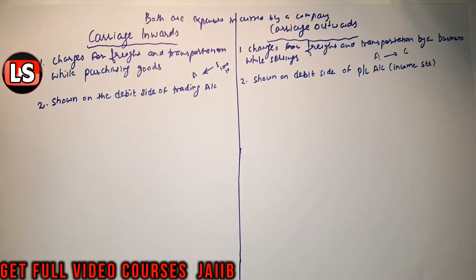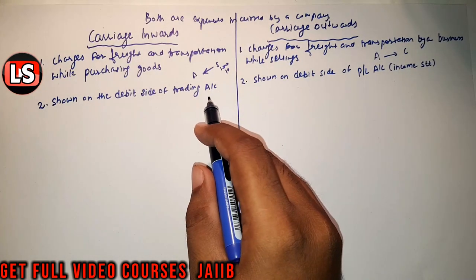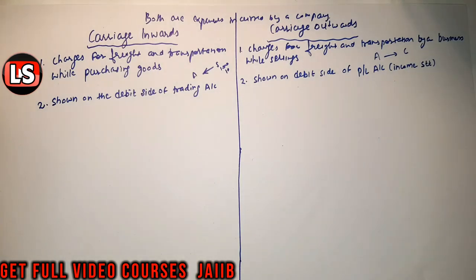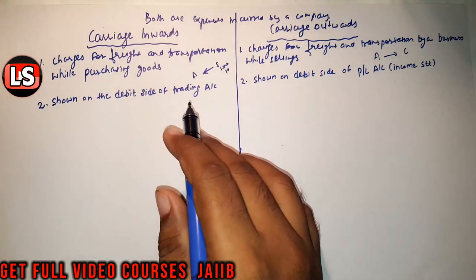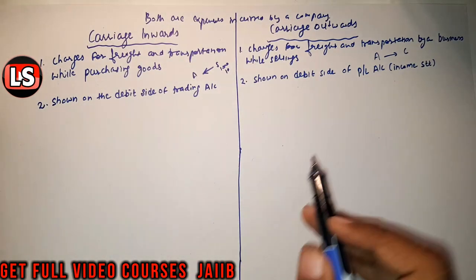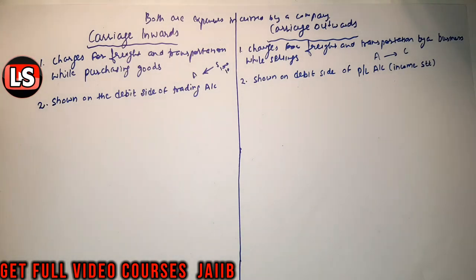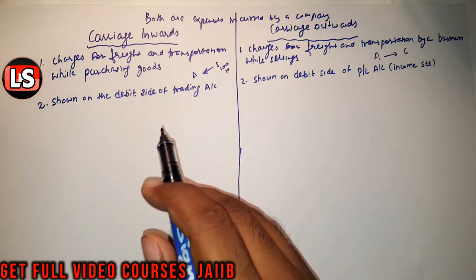The profit and loss account represents what actual profit we have earned or what loss we have incurred in a given accounting period. We can say that the trading account is prepared to ascertain gross profit for that period, and the profit and loss account is prepared to ascertain what profit or loss has occurred for the period. The balance of the trading account is transferred to the profit and loss account, and the balance of the profit and loss account is transferred to the capital account.